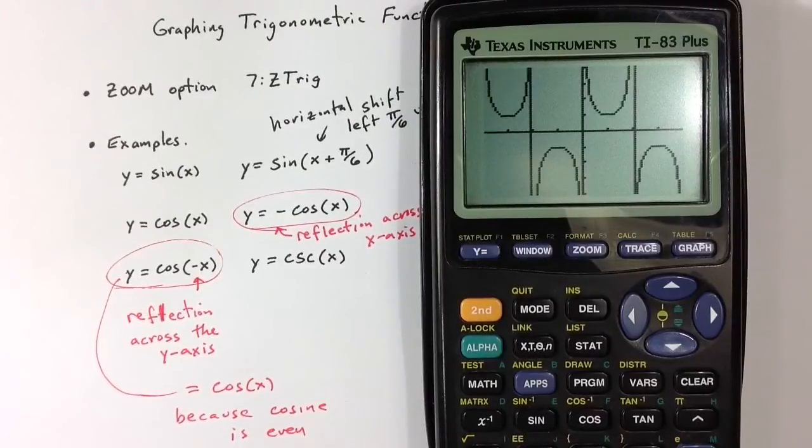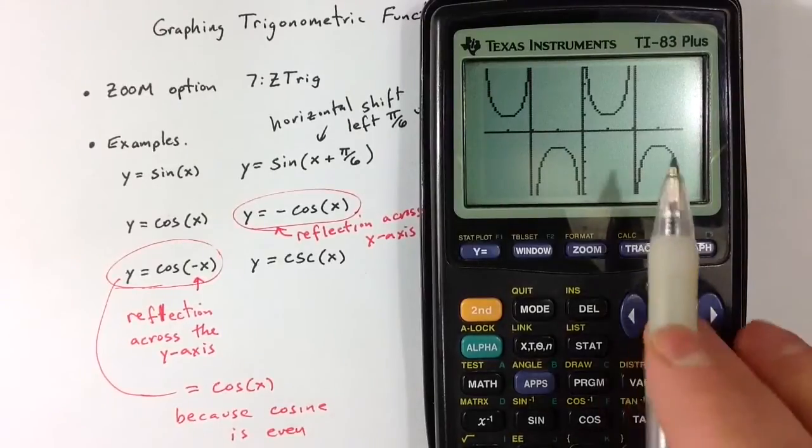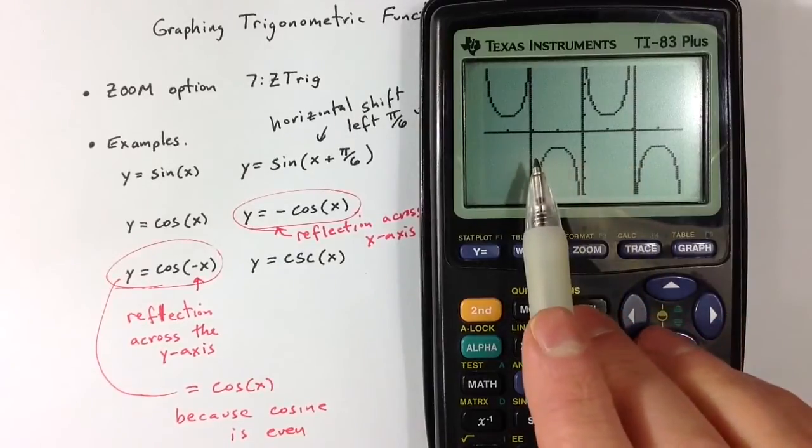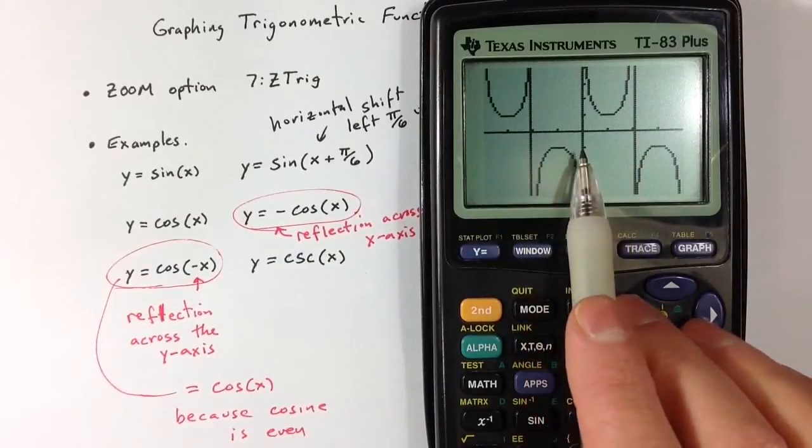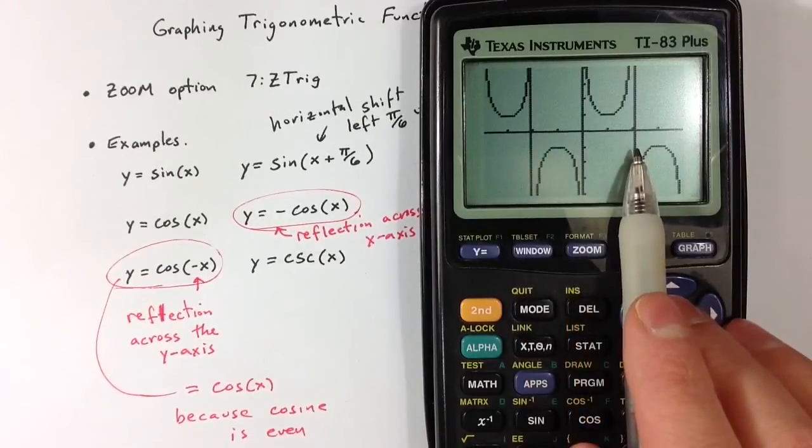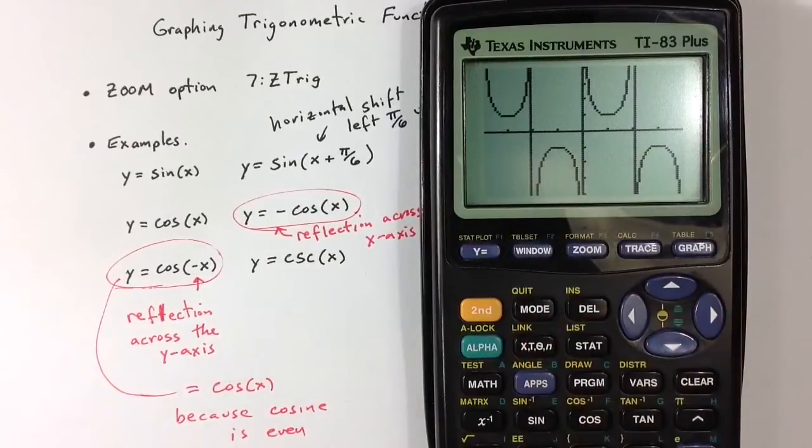And so to kind of sketch this out, this is what it looks like except there are these false lines. Cosecant is going to be undefined whenever sine equals 0. And so sine equals 0 at 0, so there's the axis there, but sine also equals 0 at pi and at negative pi. And we get kind of false lines in our picture.